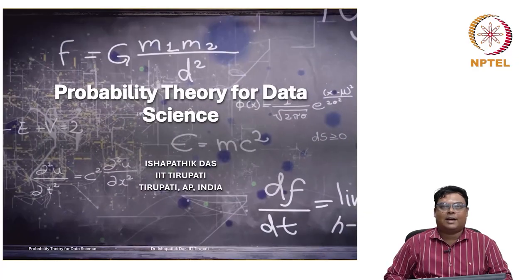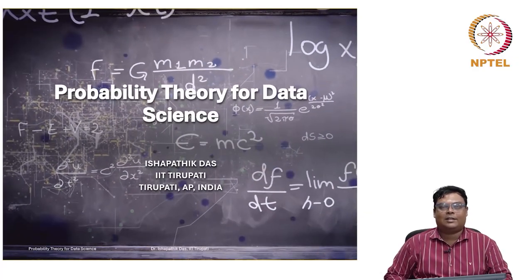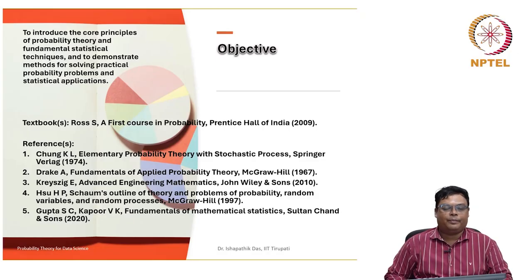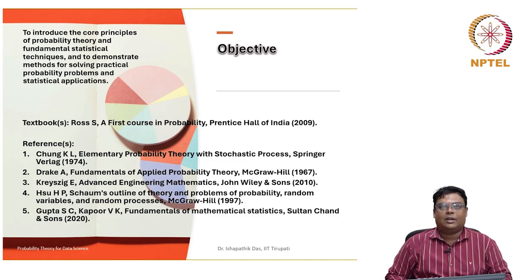Hello everyone, let us start the probability theory for data science. Let us go through the objective. The objective is to introduce the core principles of probability theory and fundamentals of statistical techniques, and to demonstrate methods for solving practical probability problems and statistical applications. We will also learn many numerical examples along with the theory in probability.